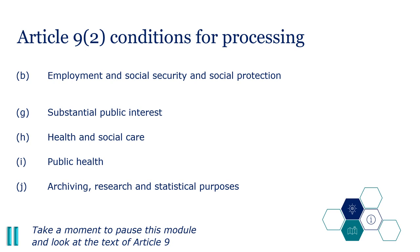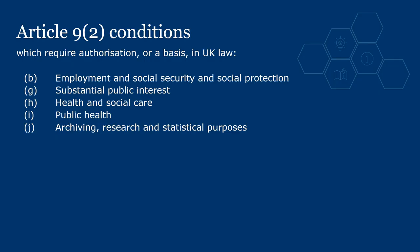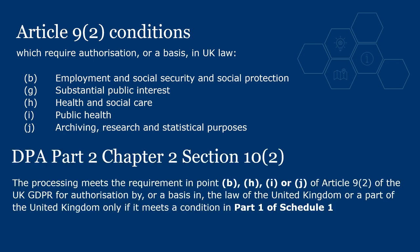These conditions all refer to processing authorised by or on the basis of UK law. Section 10, Subsection 2 of the DPA tells us that processing for reasons covered in B, H, I or J of Article 9 of the UK GDPR must meet a condition in Part 1, Schedule 1 of the DPA. Condition G, substantial public interest, is not covered here — we will come back to this shortly. Let's look at what Part 1, Schedule 1 has to say about the remaining four.